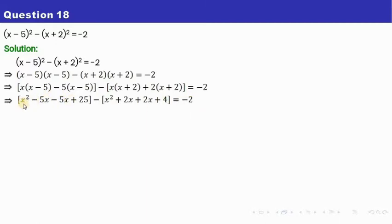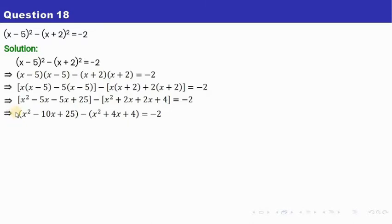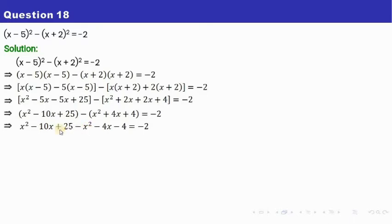We can simplify further. We have x squared minus 5x, and minus 5x gives total minus 10x. Similarly, 2x plus 2x is 4x. Now let us open up the bracket. If there is no sign outside, then there is plus, so we don't have any problem. But where we have minus, all the signs inside get changed. So we get x squared minus 10x plus 25, and here it becomes minus x squared minus 4x minus 4 equals to minus 2. So x squared and minus x squared get cancelled. Minus 10x and minus 4x is minus 14x, and 25 minus 4 is 21.